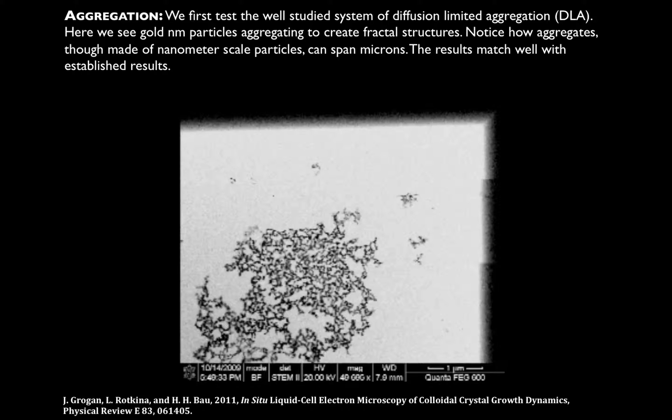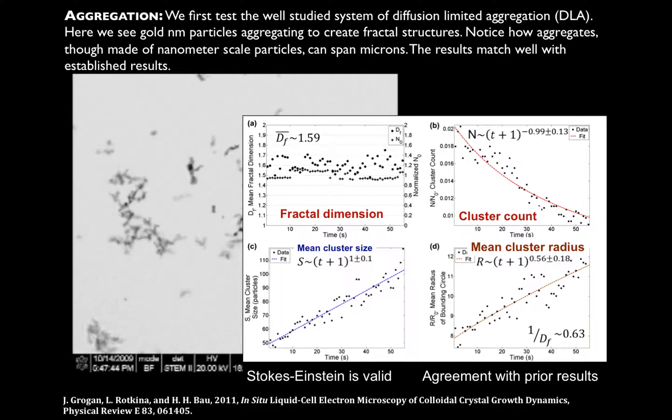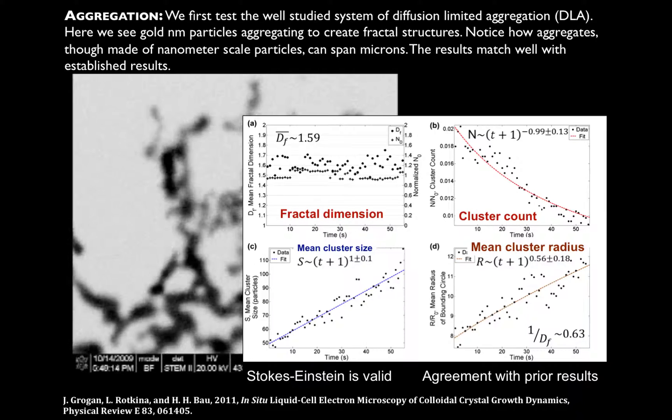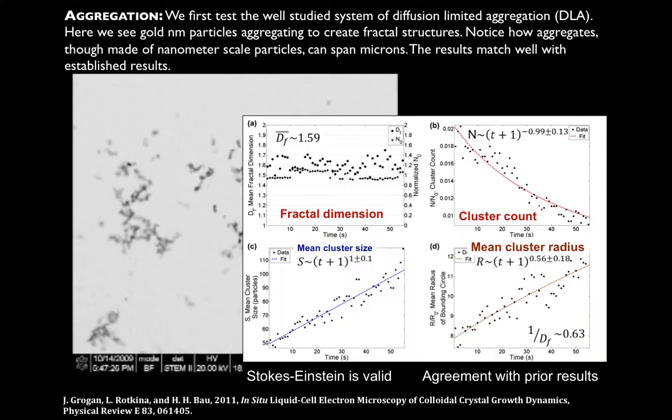The nice thing about this process for diffusion-limited aggregation is that it's been well studied, and you can look at the results using light scattering techniques to get ensemble averages. So what we can do now is we can take these dynamical videos and analyze them from our device, and then compare it to the well-known literature to make sure that what we're imaging, the way that we're imaging, is not changing the physics dramatically. When we do that, we can look at the fractal dimension, the mean size of clusters as a function of time, and other parameters, and we see that we match up pretty well with what's available in the literature, showing that this in situ platform is going to be a powerful platform for looking at different colloidal systems.